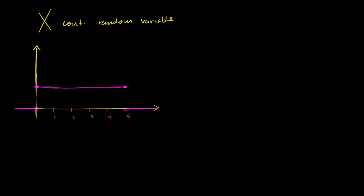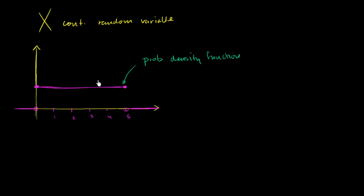This right over here, when we're talking about a continuous probability distribution, can also be referred to as a probability density function — sometimes abbreviated as a PDF. And in this case, you might notice it is a uniform probability density function.